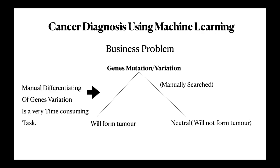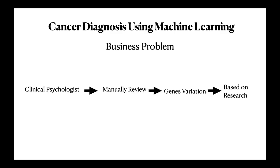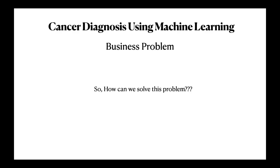Currently, this interpretation of genetic mutations is being done manually. This is a very time-consuming task where a clinical pathologist has to manually review and classify every single genetic mutation based on evidence from text-based clinical literature. So what can we do to solve this problem?